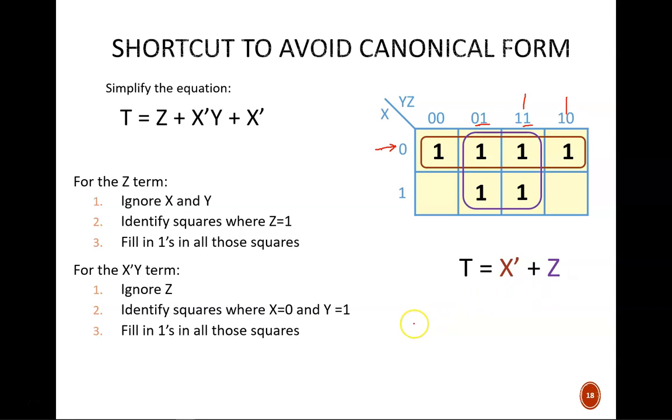With a simple example like this, it would have been quicker to avoid the Karnaugh map and simply apply Boolean algebra rule 10 to absorb the X'Y term into X'. But you can see the general idea of working with a non-canonical SOP equation.